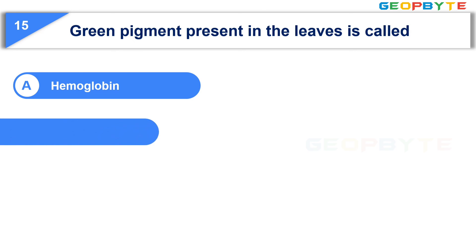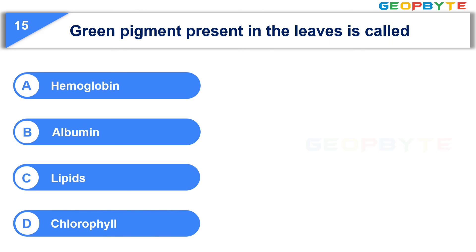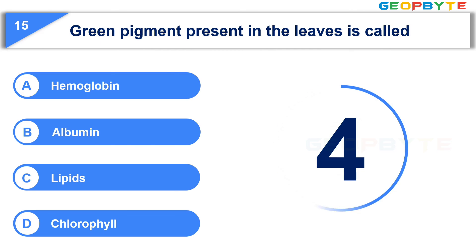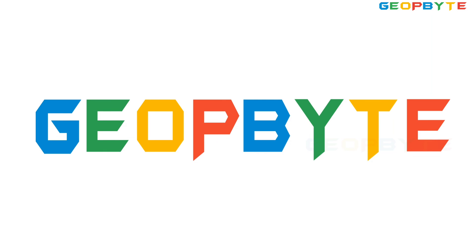The last question is: Green pigment present in the leaves is called — Option A: Hemoglobin. Option B: Albumin. Option C: Lipids. Option D: Chlorophyll. Your time starts now. Your time is up and the correct answer is Option D: Chlorophyll. Let me know how many questions you answered correctly — please do comment. Thank you for watching. Please do like, share, comment, and subscribe to GeoByte.